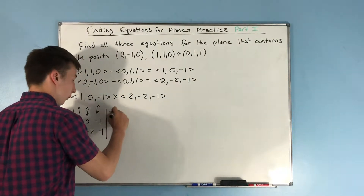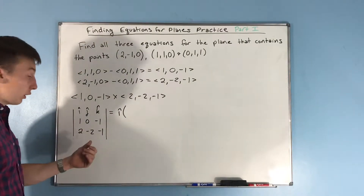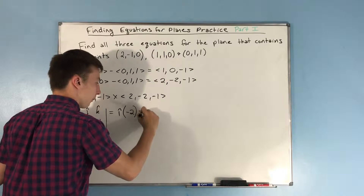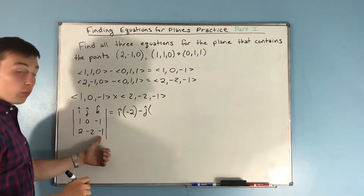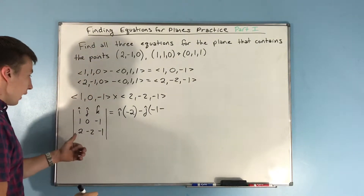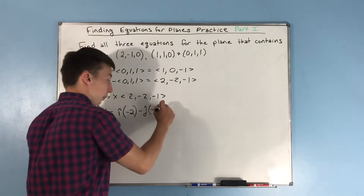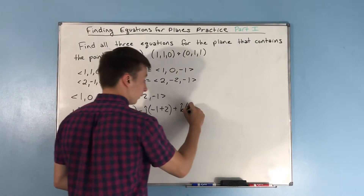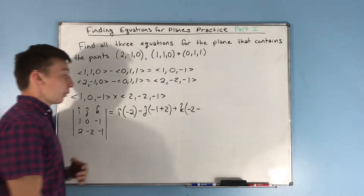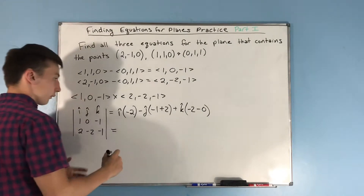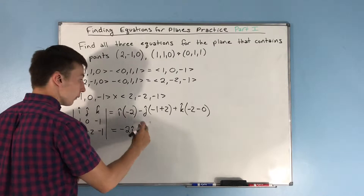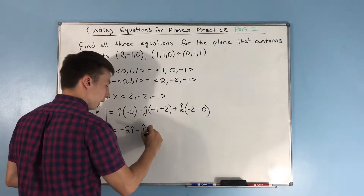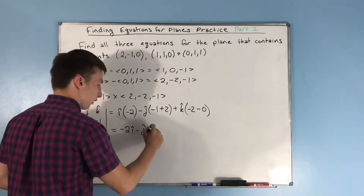We find the i-hat component: (0)(-1) - (-2)(-1) = 0 - 2 = -2. Then minus j-hat: (1)(-1) - (2)(-1) = -1 - (-2) = 1, so we get minus 1·j-hat. Then plus k-hat: (1)(-2) - (2)(0) = -2 - 0 = -2, so minus 2·k-hat.